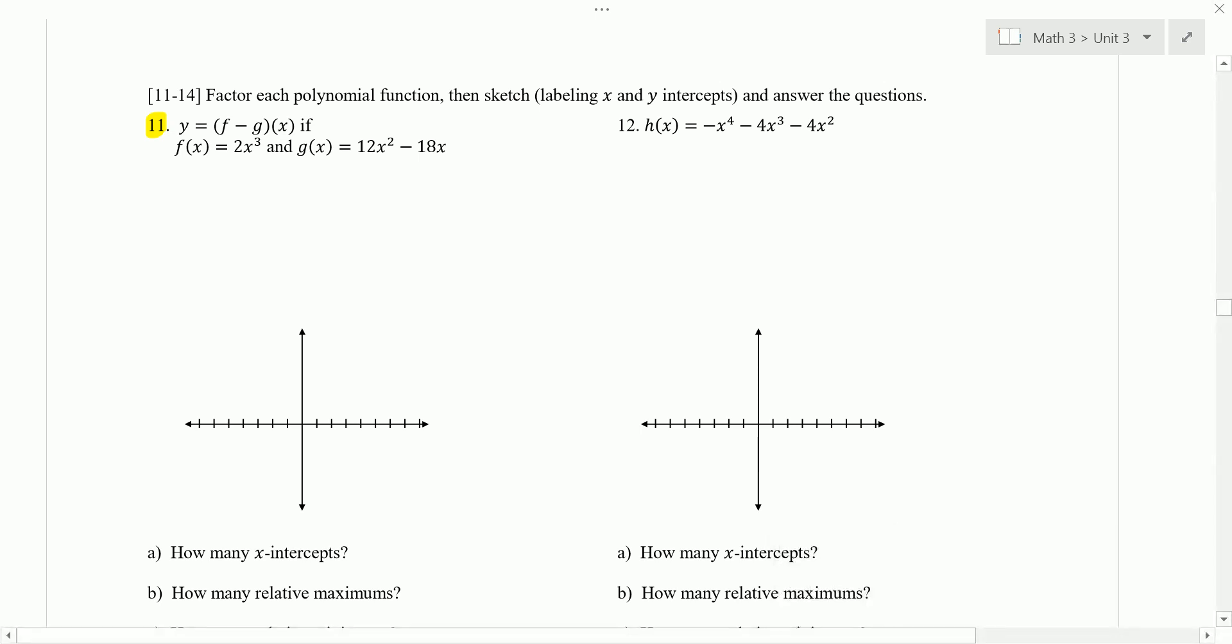Number 11, we're asked to factor each polynomial. Then the sketch, labeling x and y-intercepts. And answer the question. So here we want f minus g of x, which is the same thing as f of x minus g of x. So it's asking us to subtract the two equations. So y equals f of x. So 2x cubed minus g of x. Careful to put g of x in parentheses. Because that negative or that minus sign needs to be distributed to both the 12x squared and the negative 18x. So when we simplify this, we get 2x cubed minus 12x squared minus 18x.